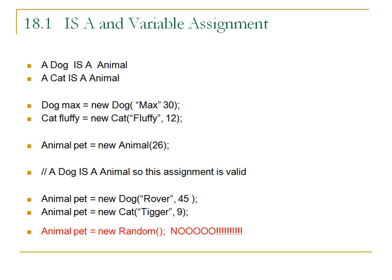And what couldn't we do? Well, we can't assign something that isn't an animal to that reference variable. So this is the first step in understanding polymorphism — that word that I wasn't going to say. I want us to go right away to the code and go back and forth between the slides and the code so that you don't get lost in the abstract concepts of it.